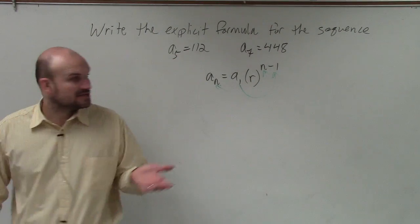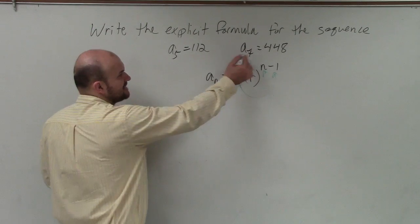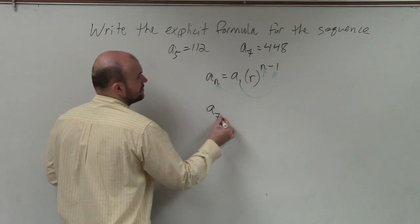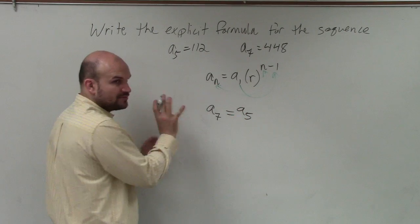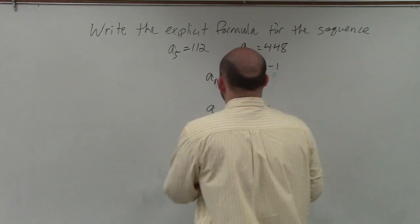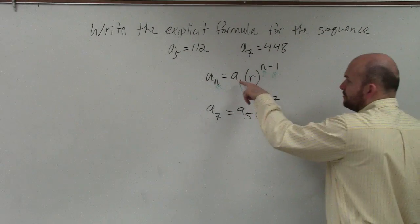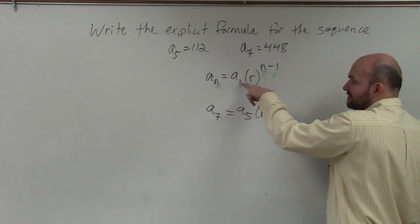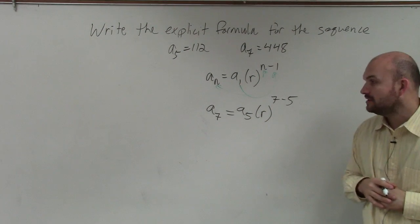So let's go ahead and take a look. So if I have these two values, then I can determine what my r is. So I'm going to use a_7 equals a_5 times r raised—so since I put a 7 in for the n, I've got to put a 7 up here. Since I put a 5 in for the 1, I've got to put a 5 up here.